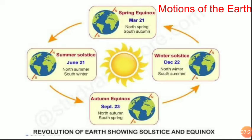This is a complete picture of the revolution of the earth, showing the solstice and equinox. Very important to understand here, children. As I told, June 21st is the longest day during the summer solstice in the northern hemisphere, and December 22nd is the longest night.